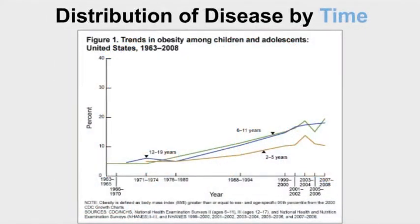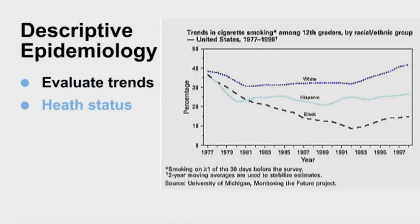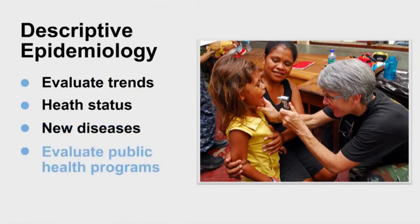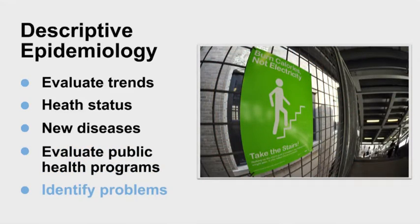This graph is an example of examining the distribution of disease by time. It shows trends in obesity among children and adolescents in the U.S. from 1963 to 2008. Descriptive epidemiology can be used to evaluate trends in disease, health, or risk factors such as smoking, determine if a health status is improving or getting worse, determine if new diseases are occurring, provide a factual basis for evaluating public health programs, and identify problems to be studied by analytic epidemiology.